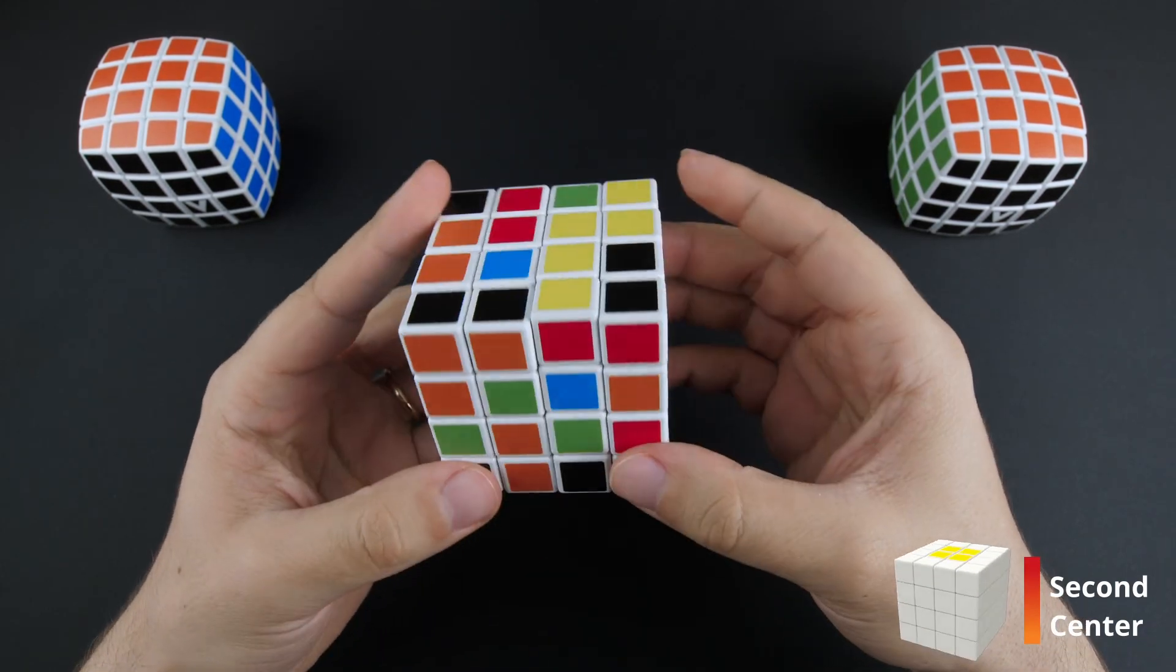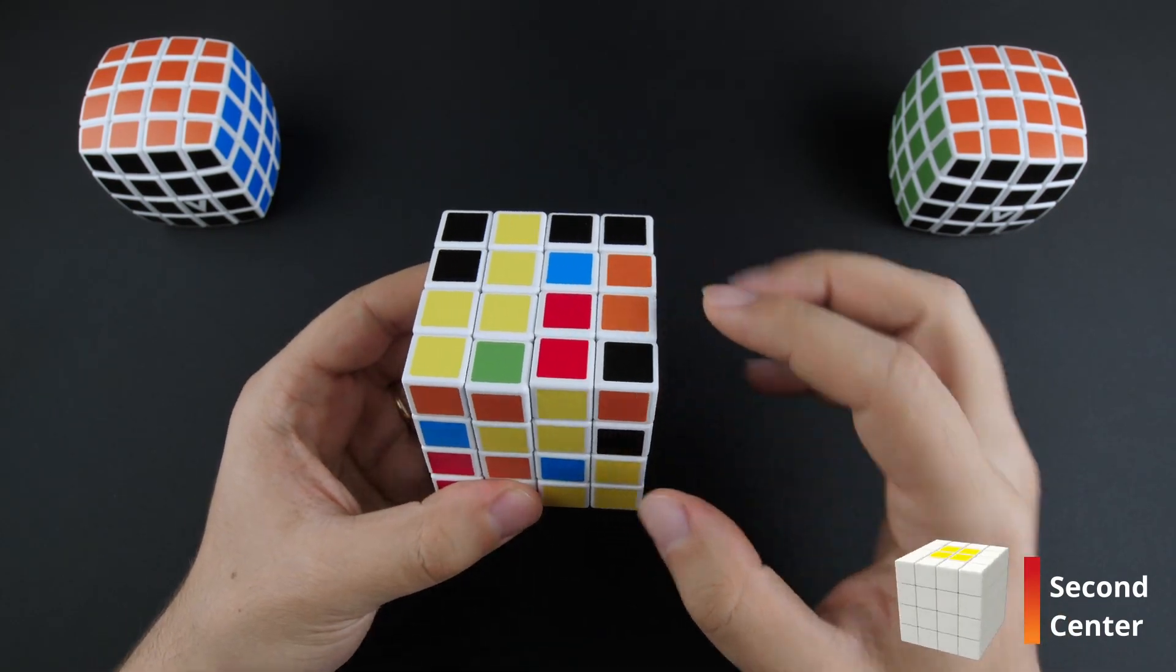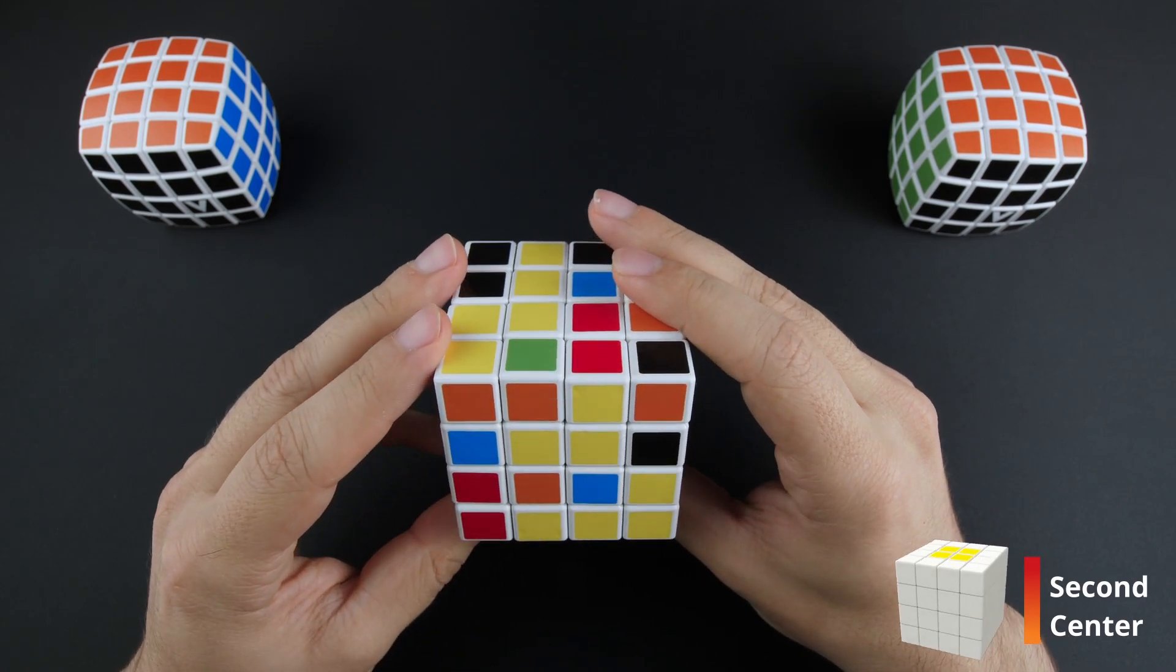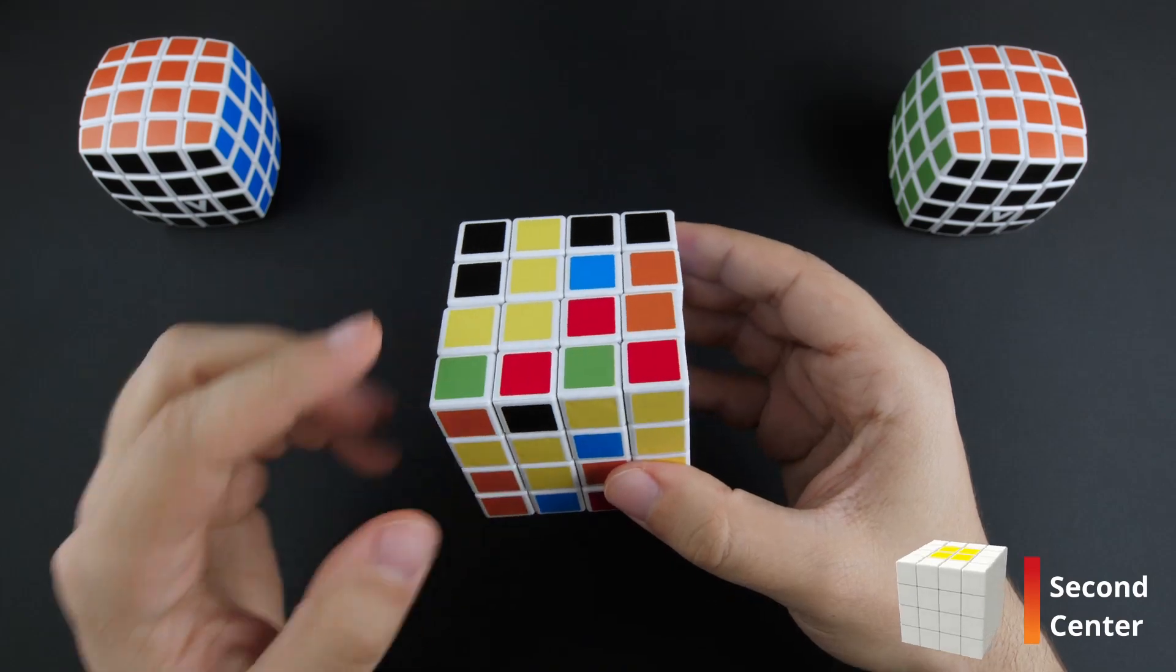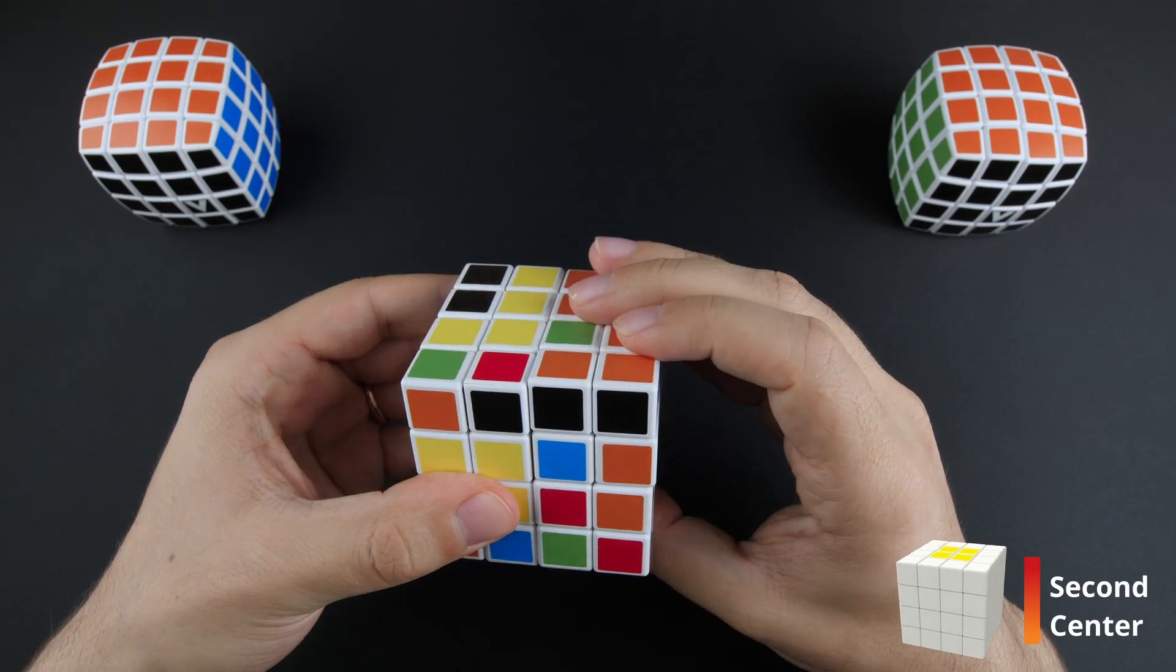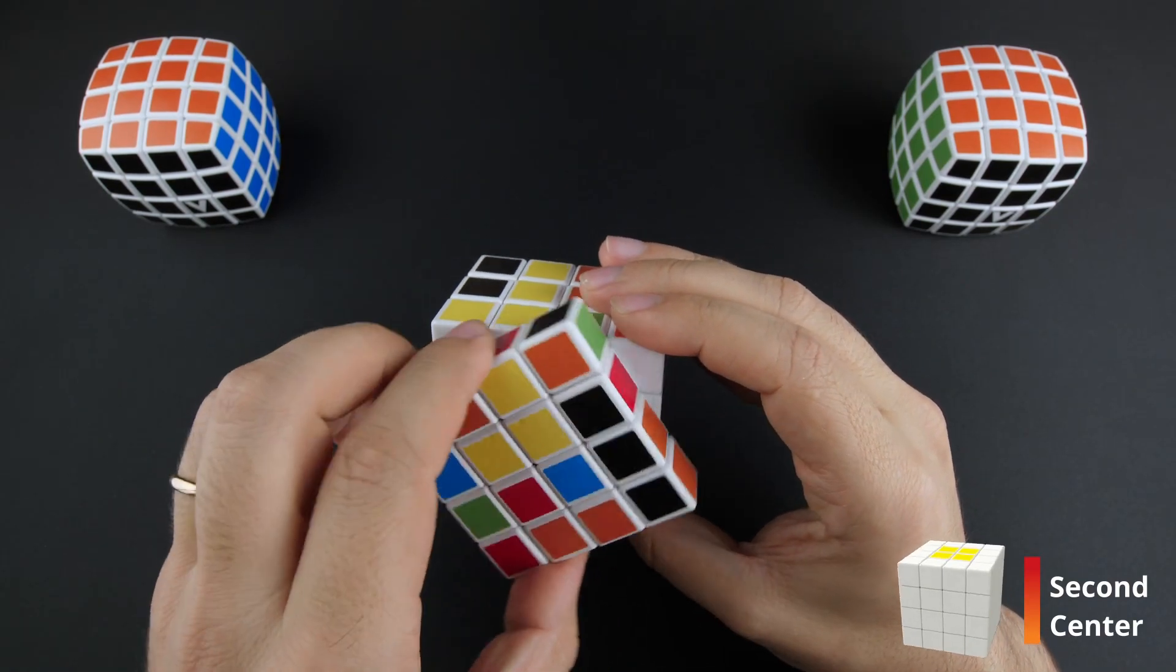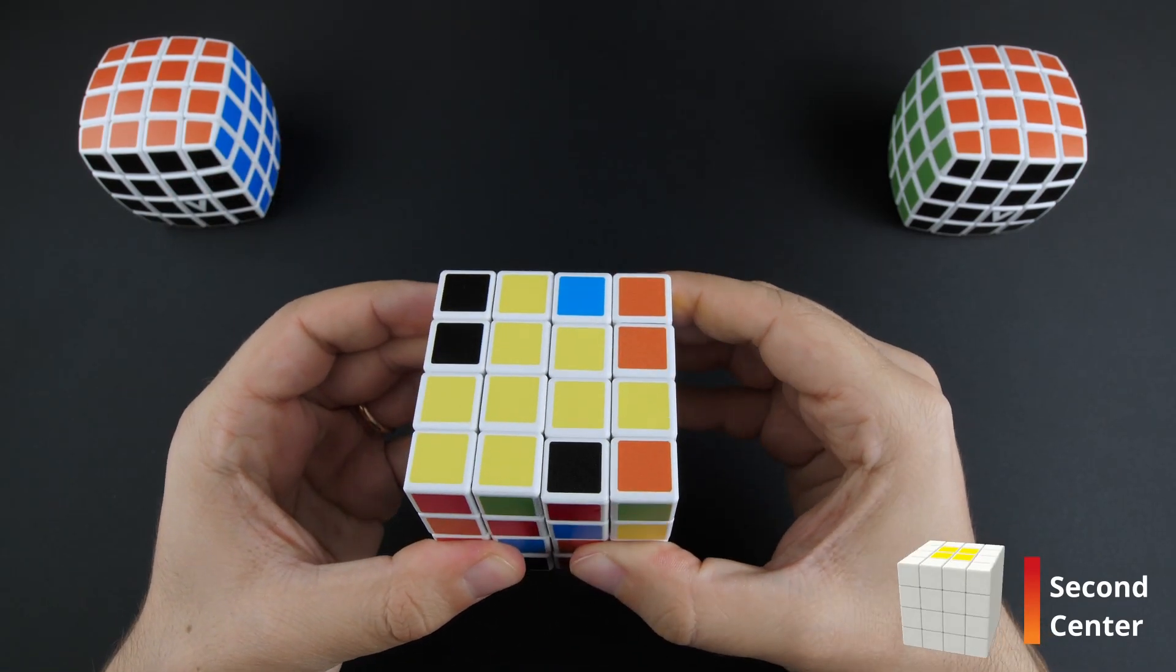Now create or find the second yellow bar. In my case, the bar is ready. And then place it on the yellow side with the same trick. Position both yellow bars vertically on the left. Now bring the top layer's right centers on the front side with a wide right move. Load the yellow bar on the right side and return it to the top layer with the opposite wide turn.